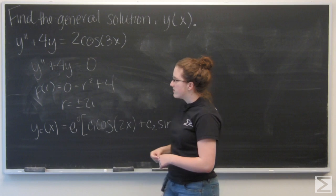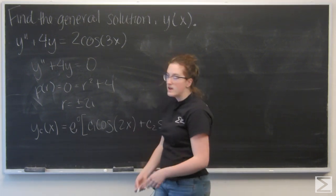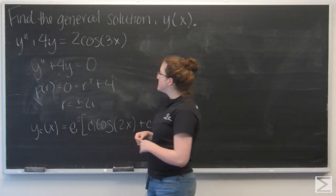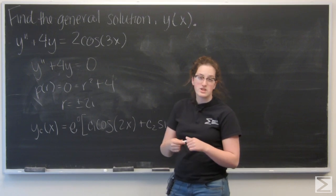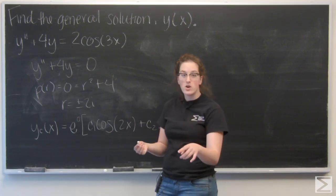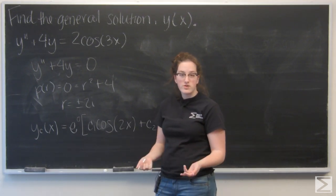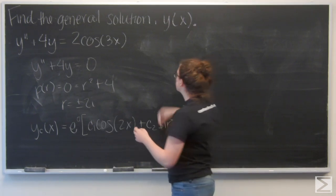So now I have yc, and I want to find my particular solution. And I can look at the forcing function and see that that is going to be a linear combination of sine 3x and cosine 3x. So I'm going to use undetermined coefficients to find out exactly what that linear combination is.